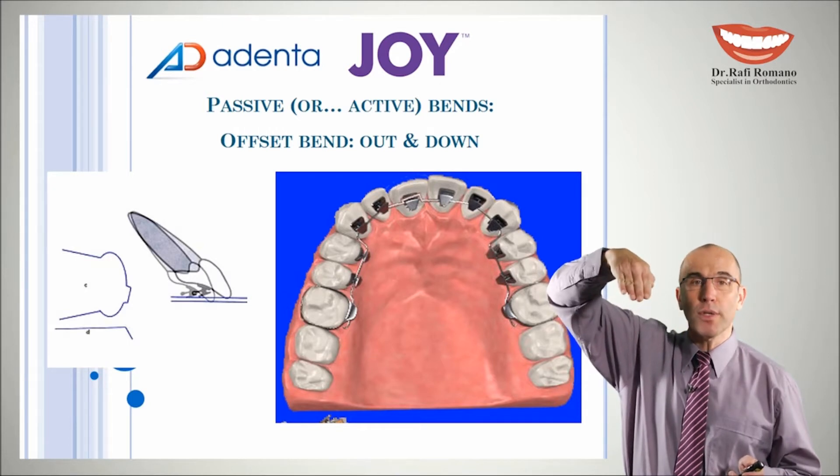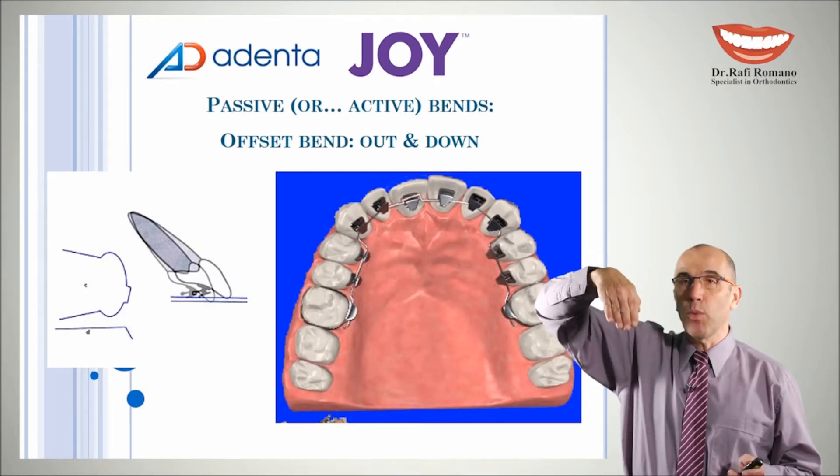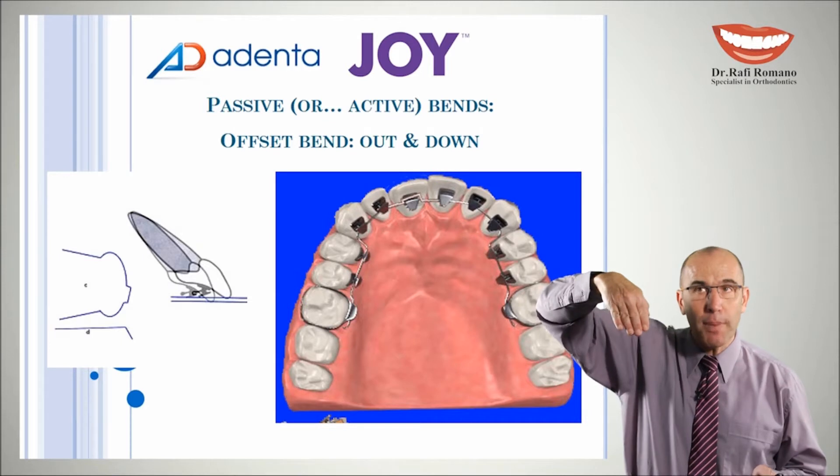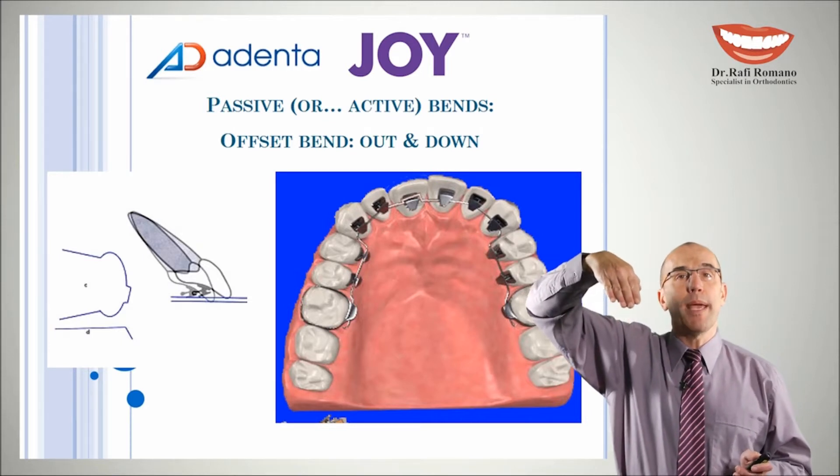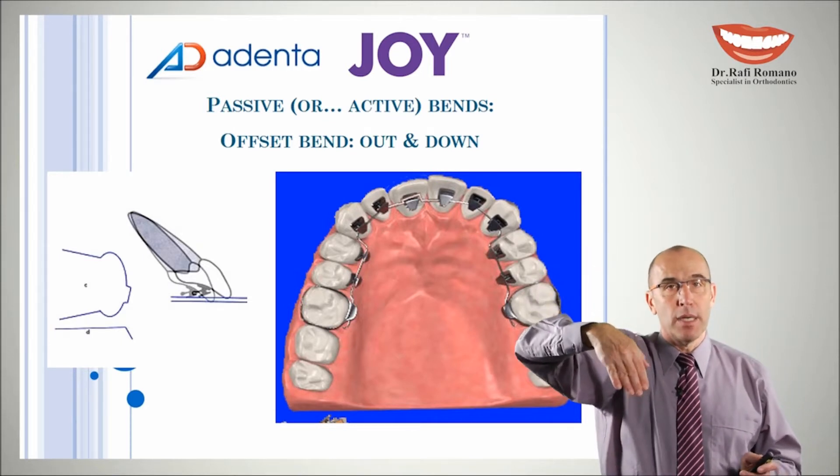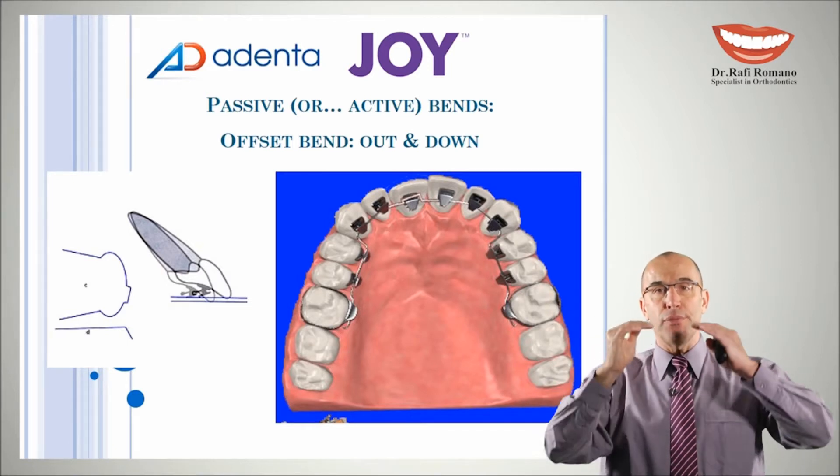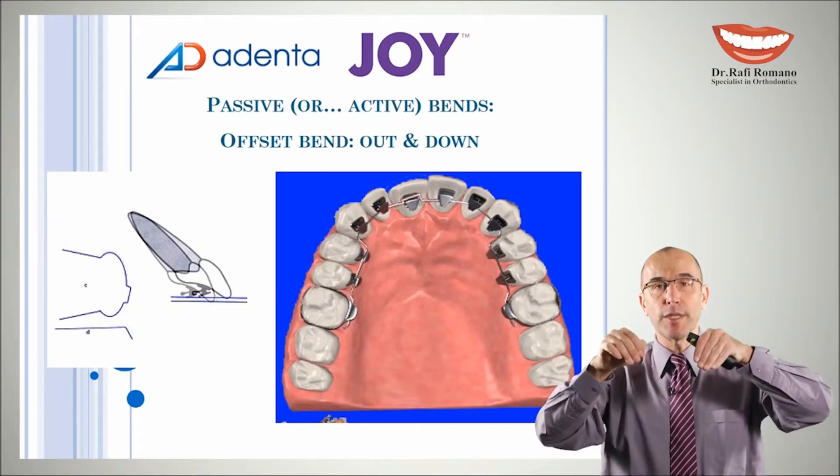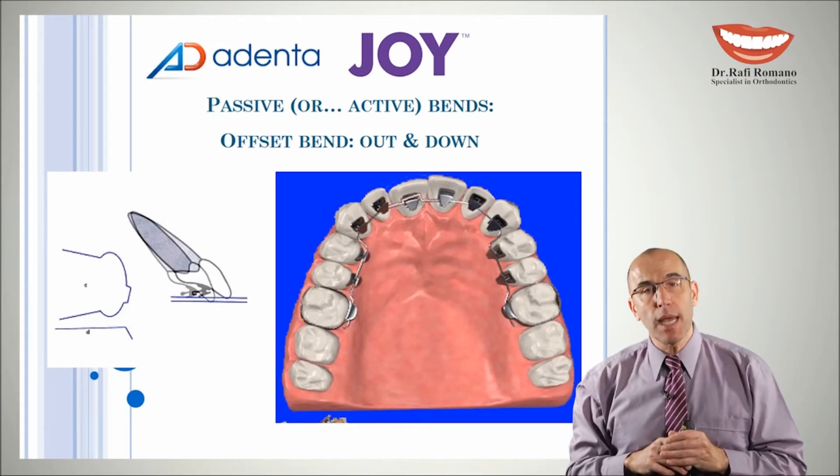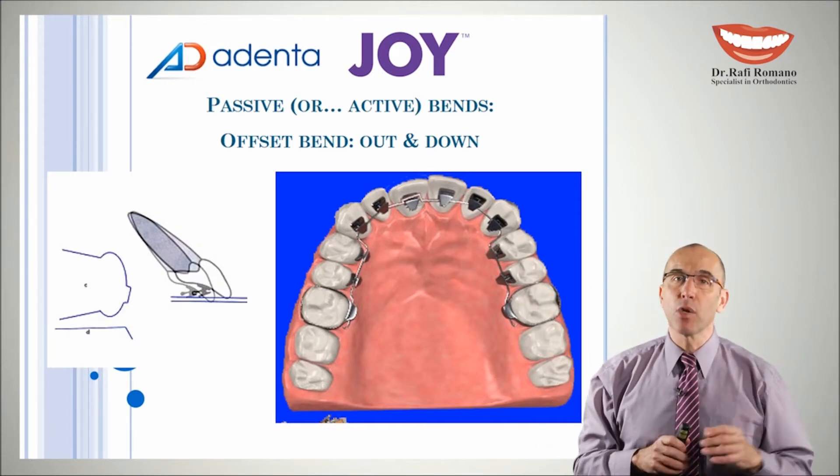It becomes shorter. So every time we want to make an out-bend, we should also make a down-bend. This step in the wire should go both vertically and horizontally. Let's see how to do it in a hands-on demonstration.